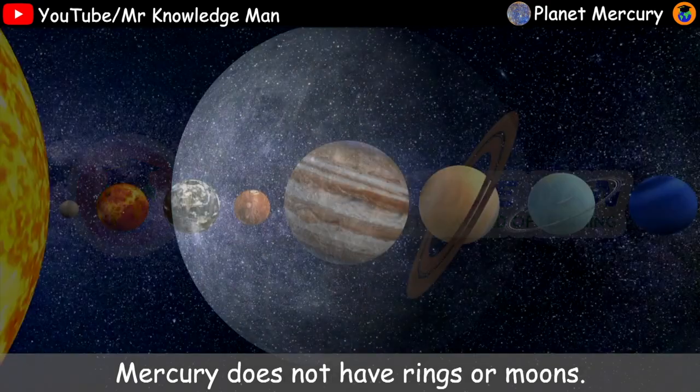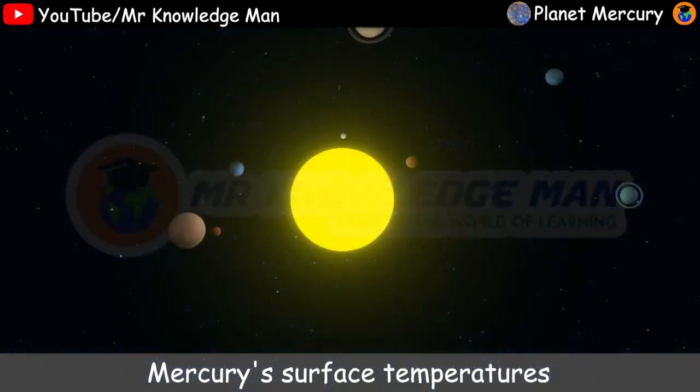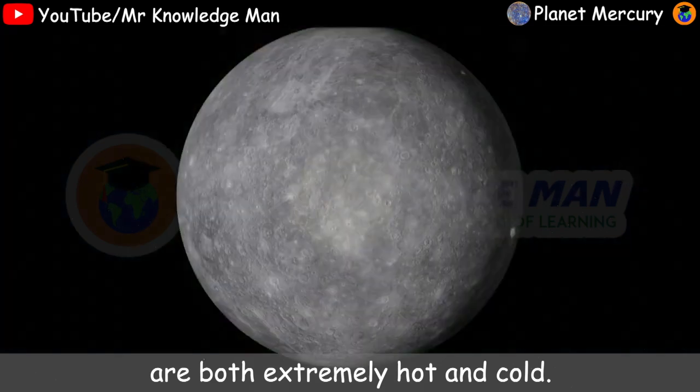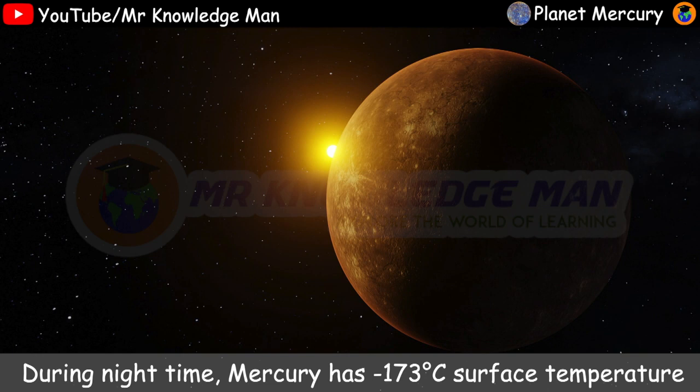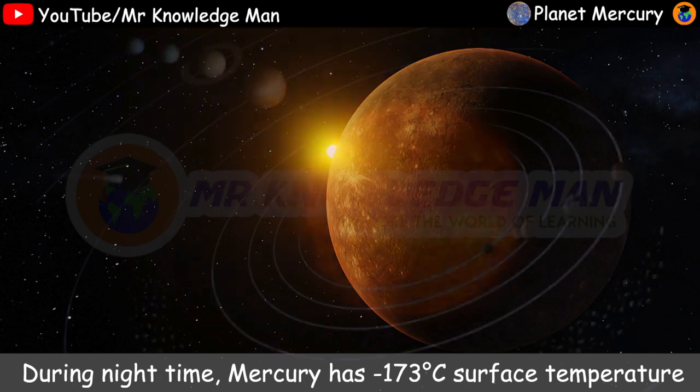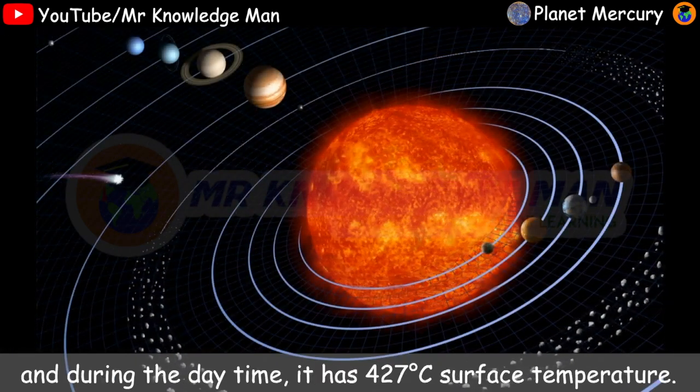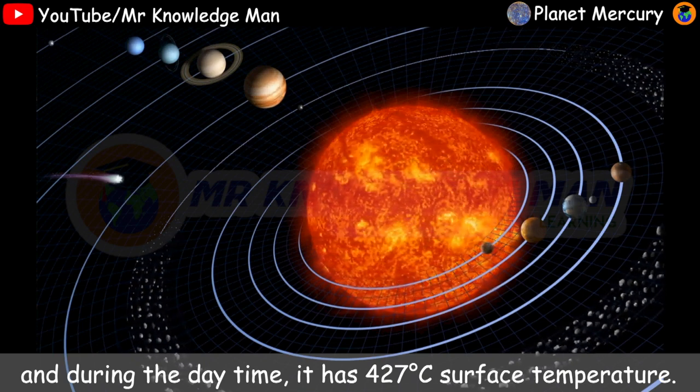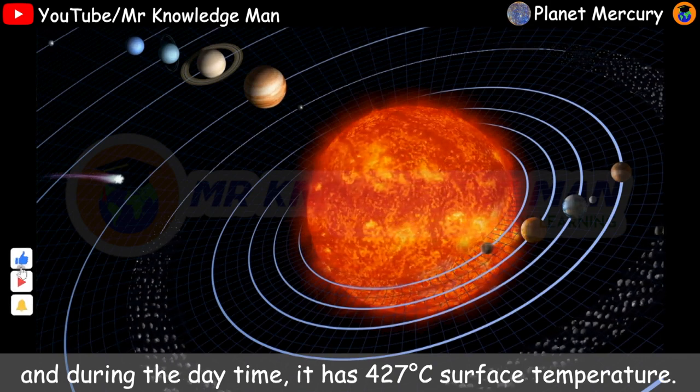Mercury does not have rings or moons. Mercury's surface temperatures are both extremely hot and cold. During the night time, Mercury has minus 173 Celsius surface temperature. And during the day time, it has 427 Celsius surface temperature.